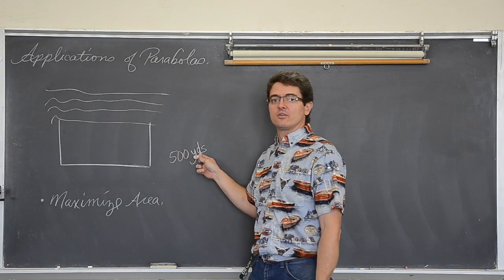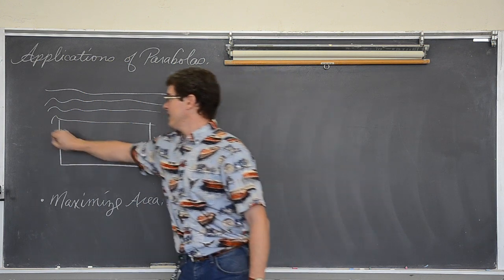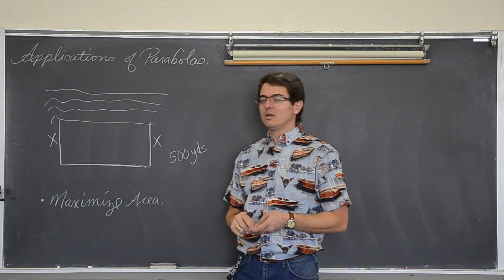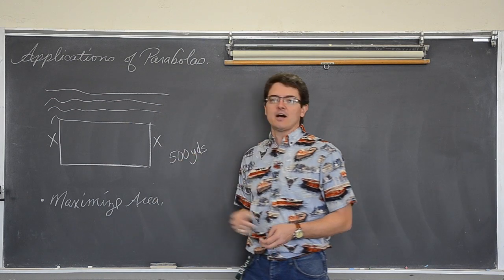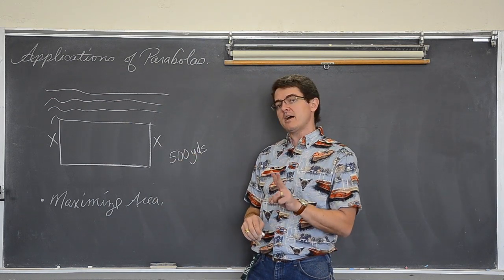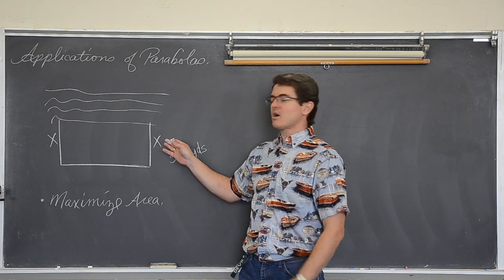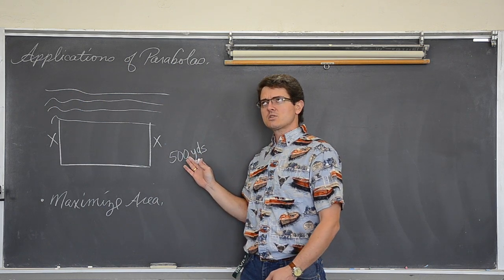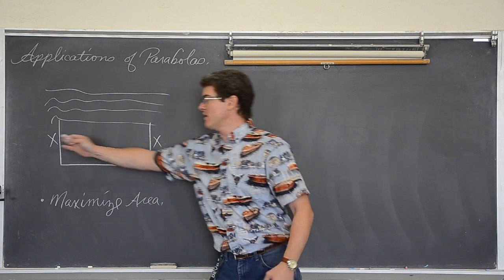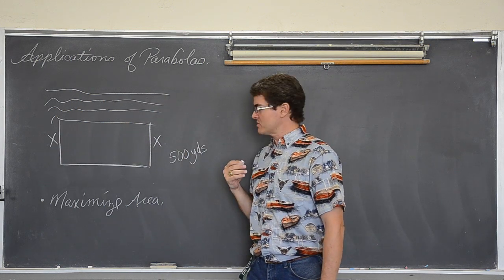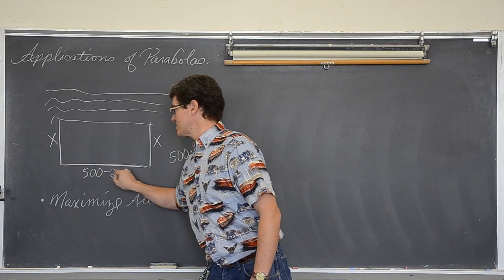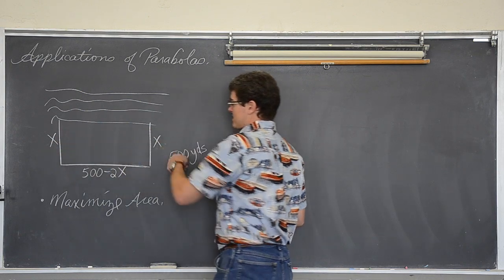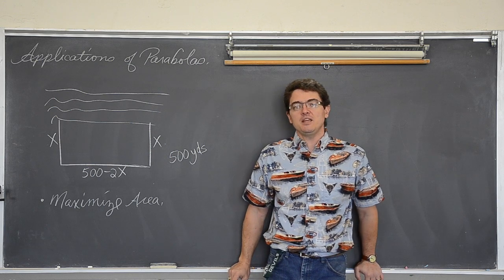How much fencing do we have? 500 yards. So we are going to label this side x and this side x, since it is going to be a rectangle. Normally we say x and y for the sides of a rectangle, but we know these three sides have to add up to 500 yards and we have already used two of those sides. So what is left? If this were 100 yards — 100 and 100 makes 200, and there would be 300 left. As an expression: 500 minus 2 times whatever these lengths are, which gives us 500 minus 2x.